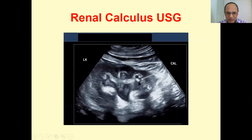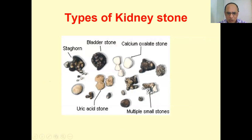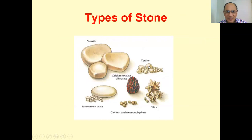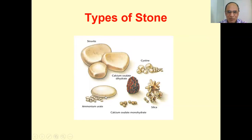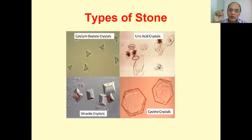On sonographic images you can see the calculus. Different types of stones include staghorn calculi (very large), bladder stones, calcium oxalate stones (multiple small), uric acid stones, and cystine stones — each with different shapes. Calcium oxalate is detected by X-ray; uric acid and cystine stones by sonography. Silica, ammonium urate, and calcium oxalate are different varieties.